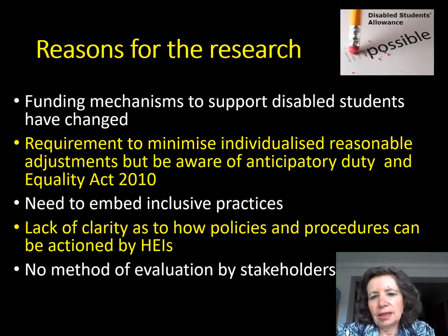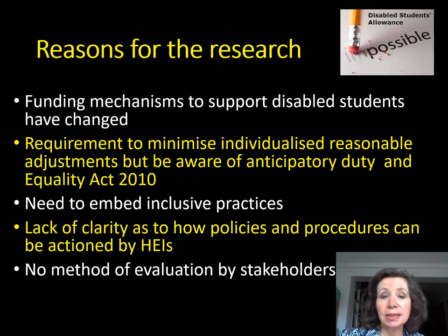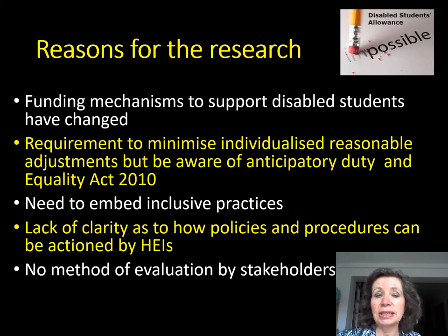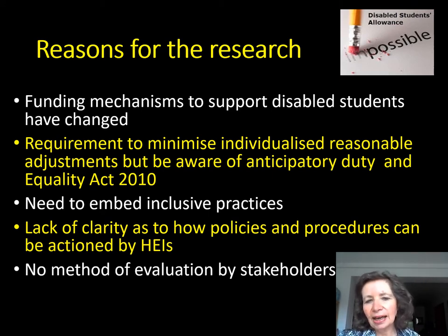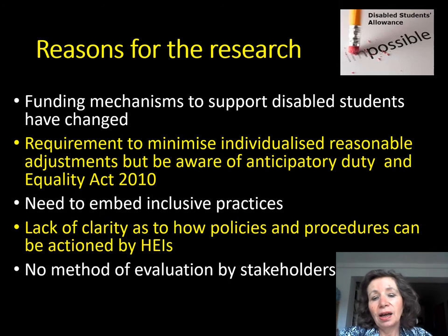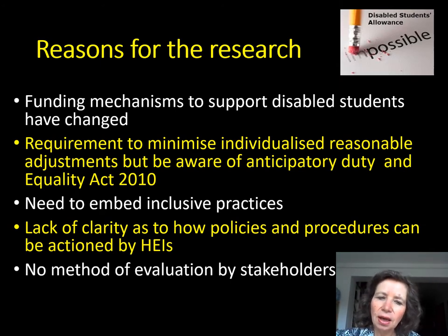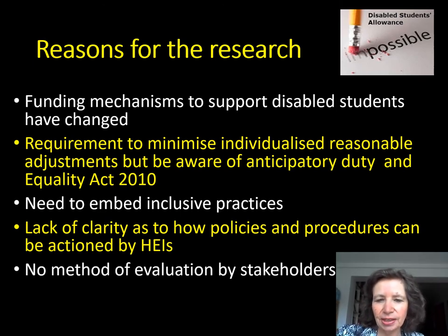The reasons for this research: funding mechanisms to support disabled students have changed. There's a requirement to minimise individual reasonable adjustments, but still recognise that Equality Act duties are anticipatory in relation to disabled students — we don't just put on a sticking plaster later, we need to embed inclusive practice. But there's a lack of clarity about how policies and procedures can be actioned in actual practice, and evaluation of all these processes is difficult without a sector-wide baseline against which to measure them.